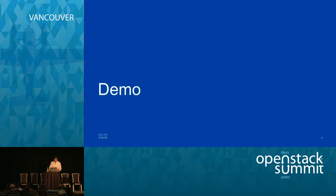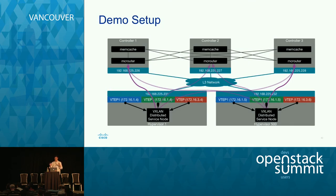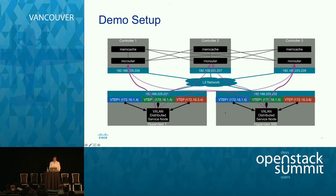Let's look at the demo setup. We have three virtual machines on this laptop pretending to be controllers, running memcache and McRouter clustering the memcache. We have two hypervisor virtual machines, each with three VTEPs for different tenants in three different networks: 172.16.1.4, 172.16.2.4, 172.16.3.4, and 172.16.1.5, 172.16.2.5, 172.16.3.5. Distributed service nodes are running on those hypervisors. At the end I'll provide a link to a GitHub repo with Ansible playbooks so you can set this up yourself.